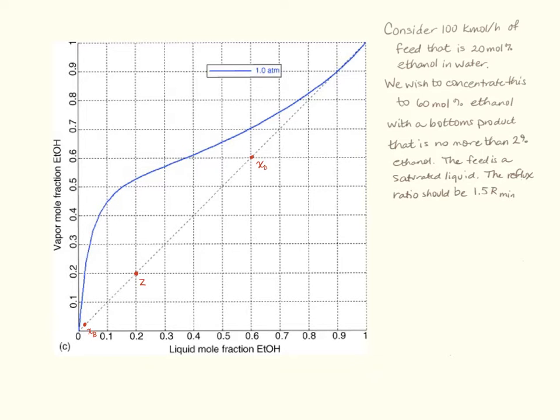The feed is a saturated liquid, which means that q is equal to, it's all saturated liquid, so q is 1. And the reflux ratio should be one and a half times the minimum reflux ratio.